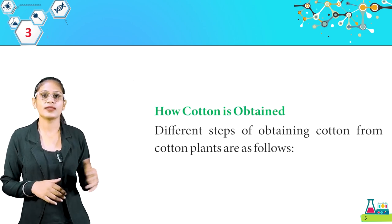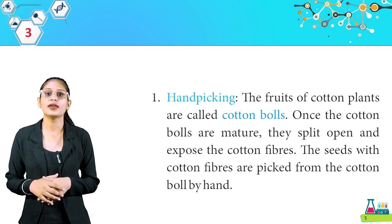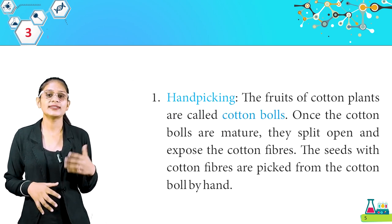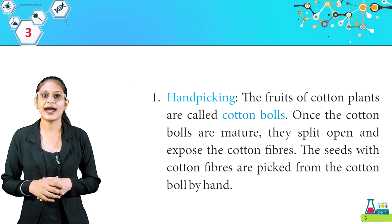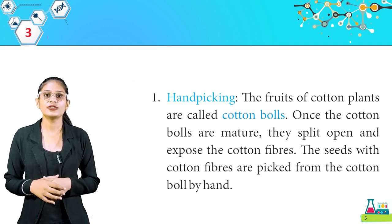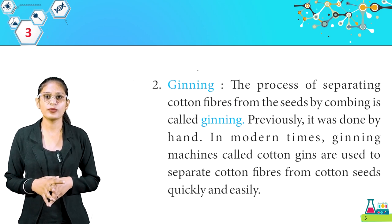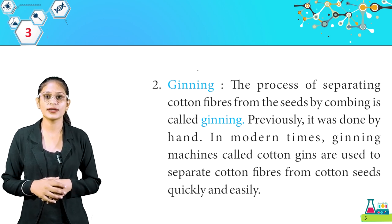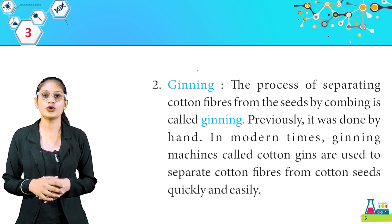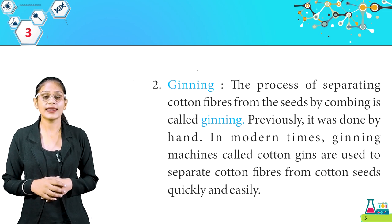How is cotton obtained? The different steps of obtaining cotton from cotton plants are as follows. First, handpicking: the fruits of cotton plants are called cotton bolls. Once the cotton bolls are matured, they split open and expose the cotton fibers. The seeds with cotton fibers are picked from the cotton boll by hand. Second, ginning: the process of separating cotton fibers from the seeds by combing is called ginning. Previously it was done by hand, but in modern times, ginning machines called cotton gins are used.